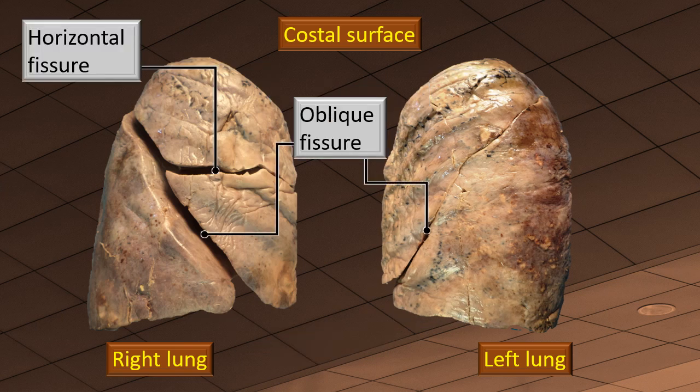On the costal surface, you can see an oblique fissure in both lungs, running downwards and forwards. In the right lung, there is an additional fissure — more or less transverse — cutting across and moving towards the anterior border. That's the horizontal fissure. Generally speaking, the right lung is three-lobed and the left lung is two-lobed. Both lungs have an oblique fissure demarcating upper and lower lobes, but only the right lung has a horizontal fissure, which further demarcates a third lobe — the middle lobe.